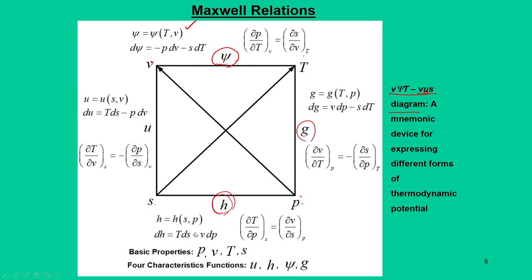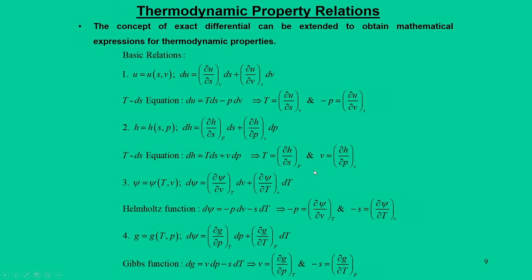In summary, the basic properties — pressure, volume, temperature, and entropy — are the cardinal points of the square, and the characteristic functions — internal energy, enthalpy, Helmholtz function, and Gibbs function — are represented as the lines. This is a mnemonic device for expressing the differential form of thermodynamic potentials, and this is the easy way to write the Maxwell relations.